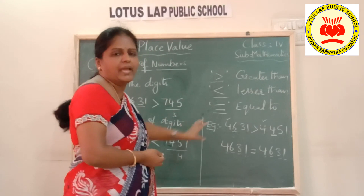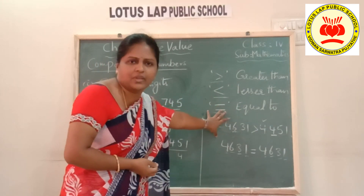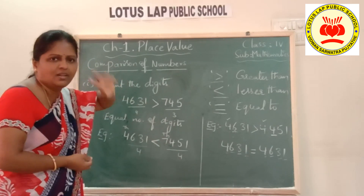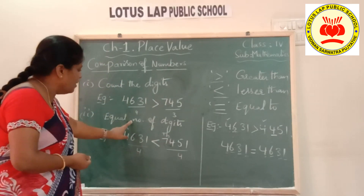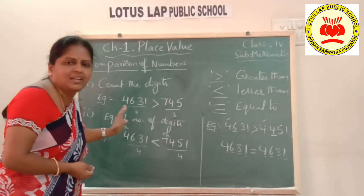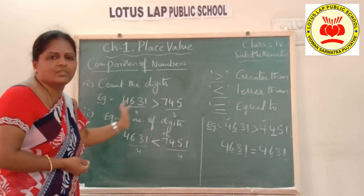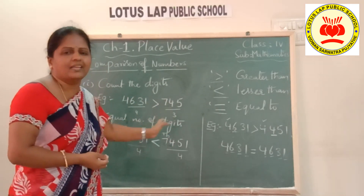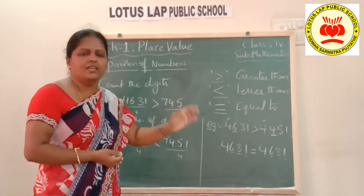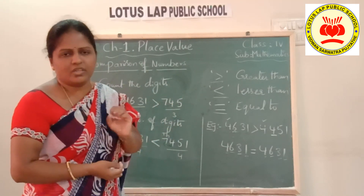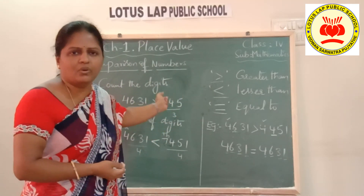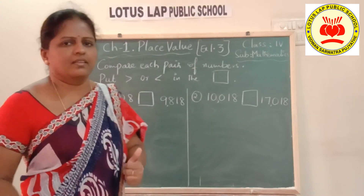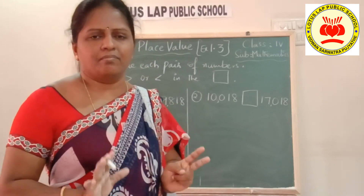This is how you compare two numbers. First rule: count the number of digits. Second rule: when digits are equal, start comparing from the leftmost digit of both numbers — the highest place — and continue the comparison until you get the answer. I hope you understood how to compare two numbers.